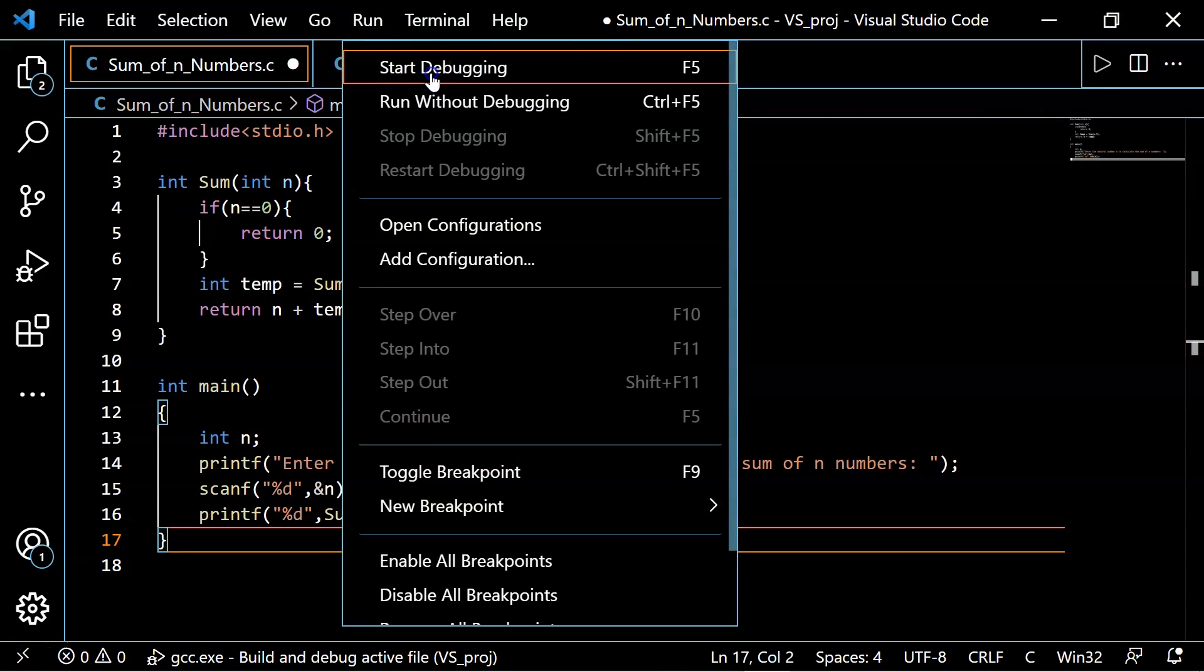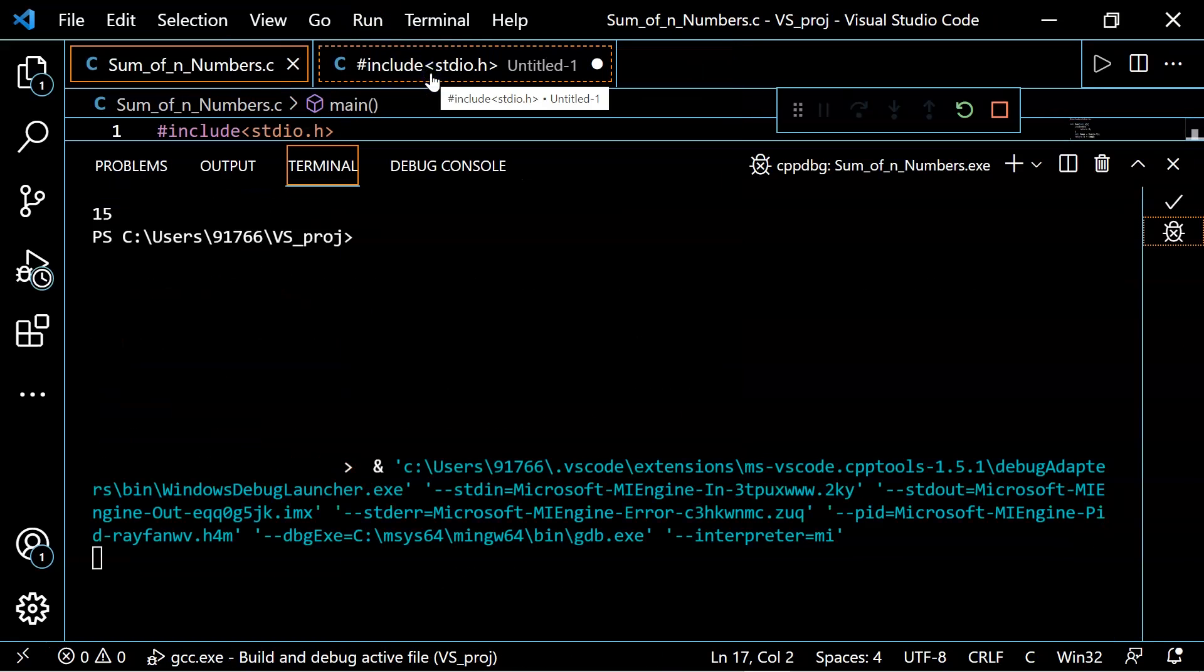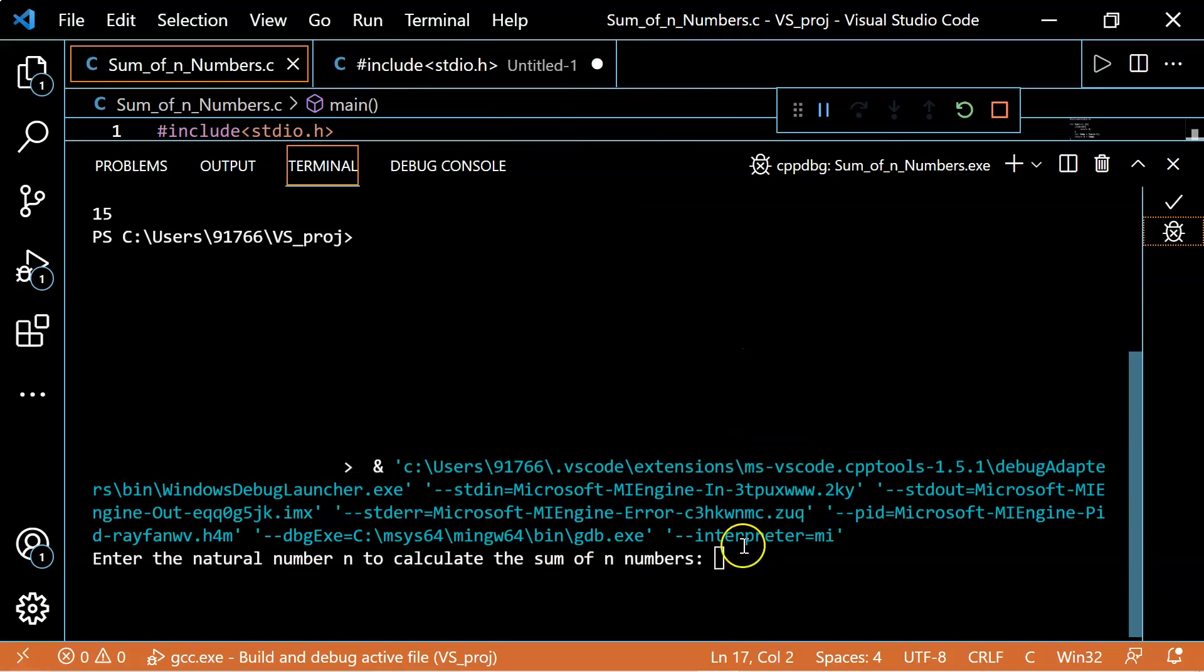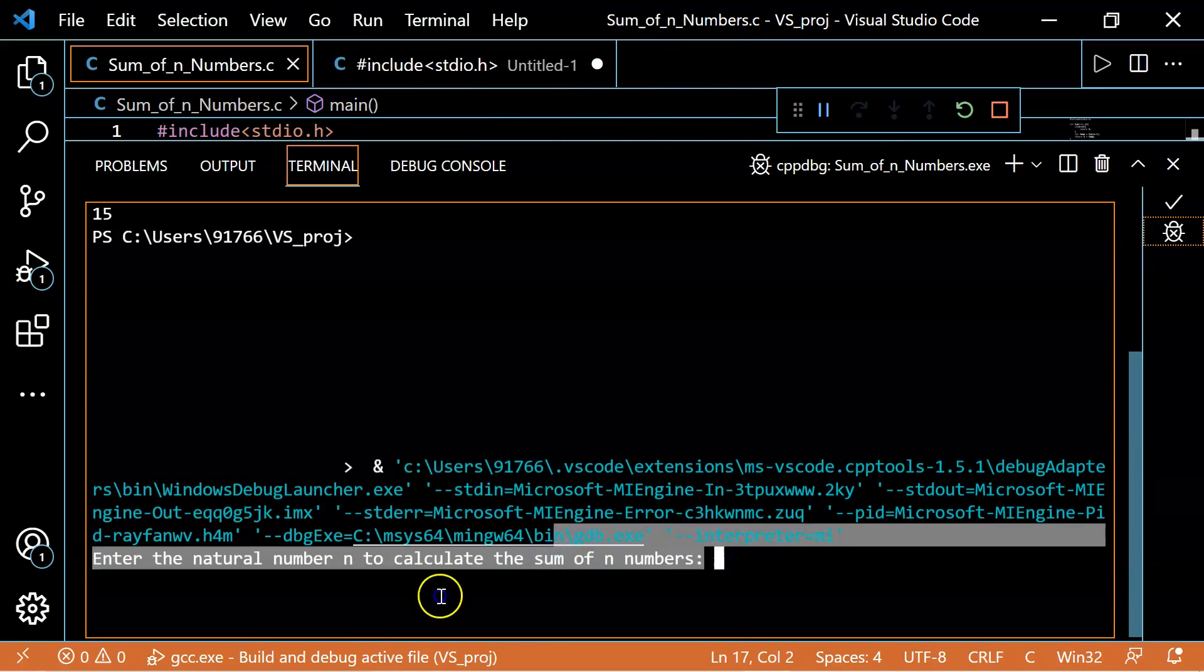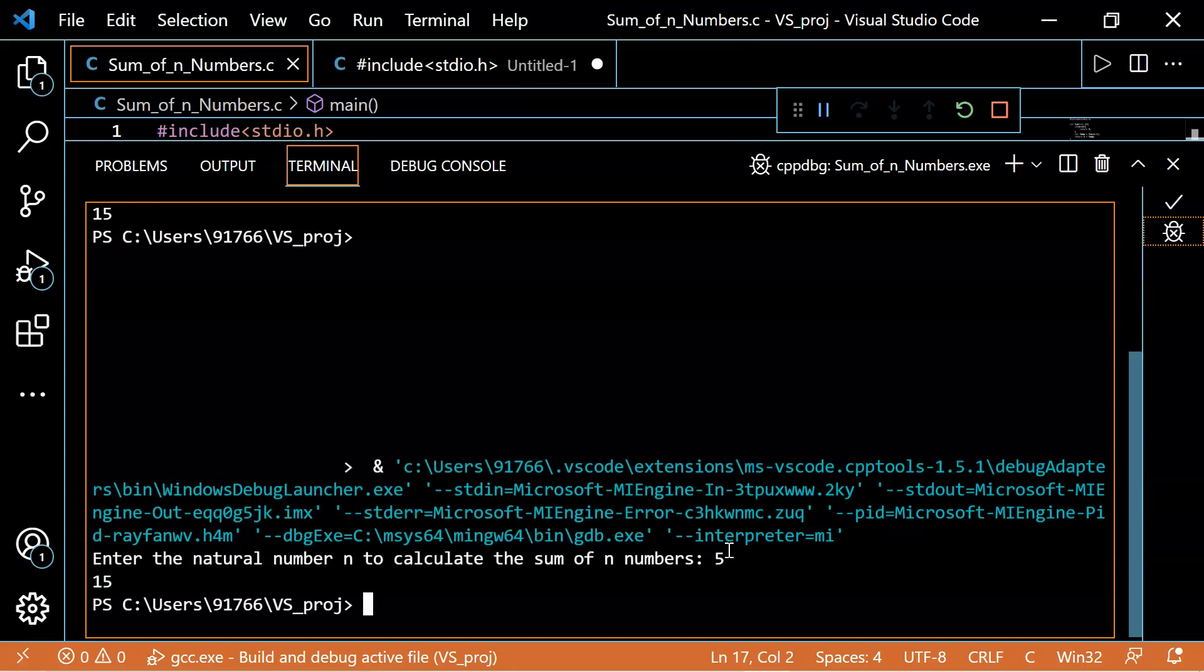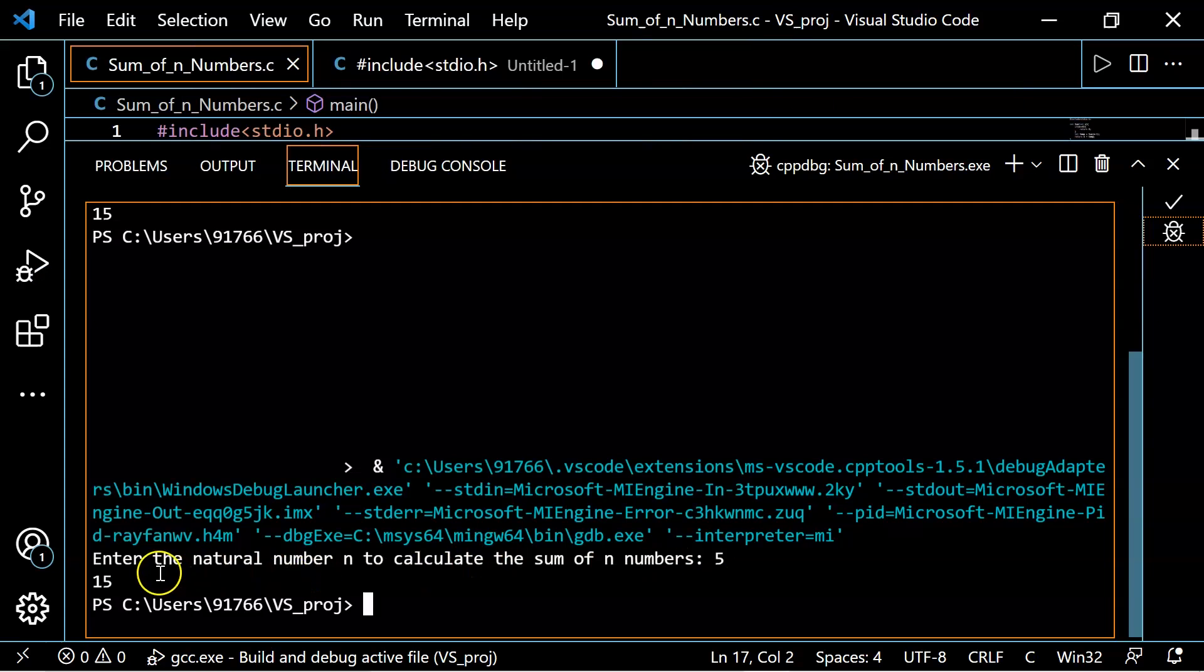Here, the console is asking us to provide the value of variable n. And I'm going to provide value 5 here. So let's provide value 5 and enter. So the output that we're getting is 15 here. That means the code works fine.